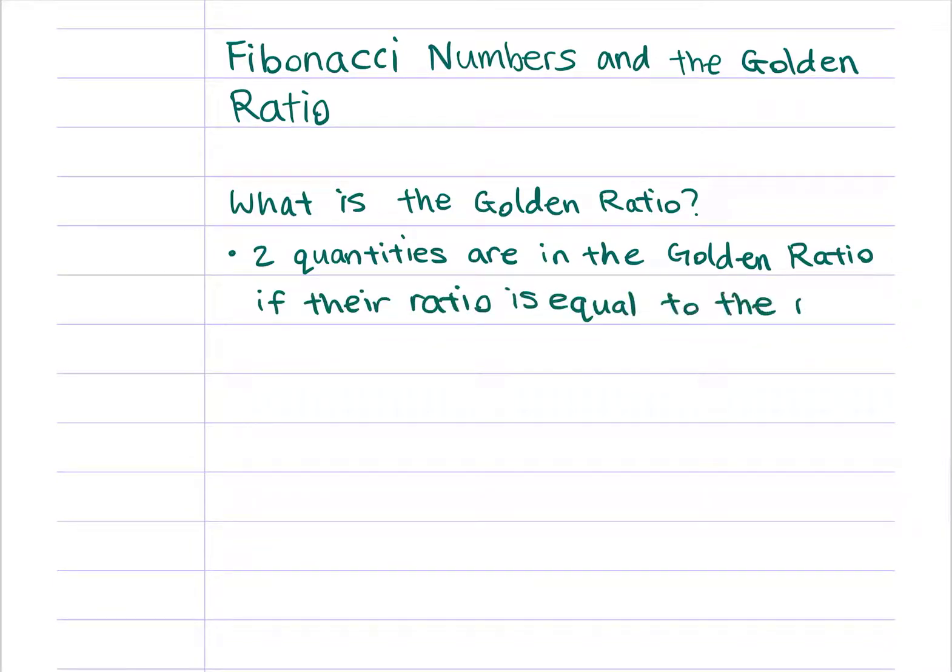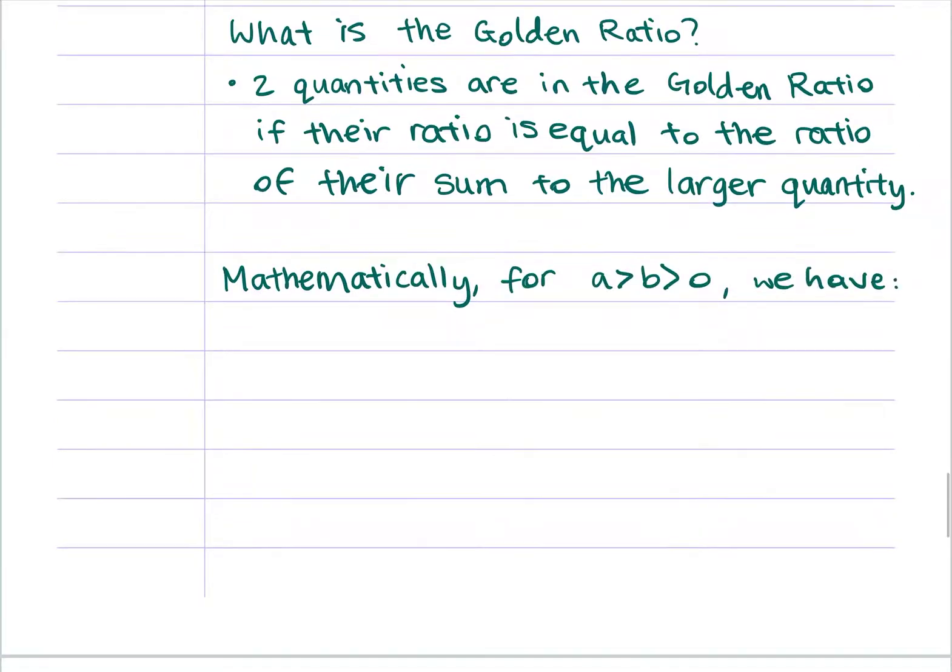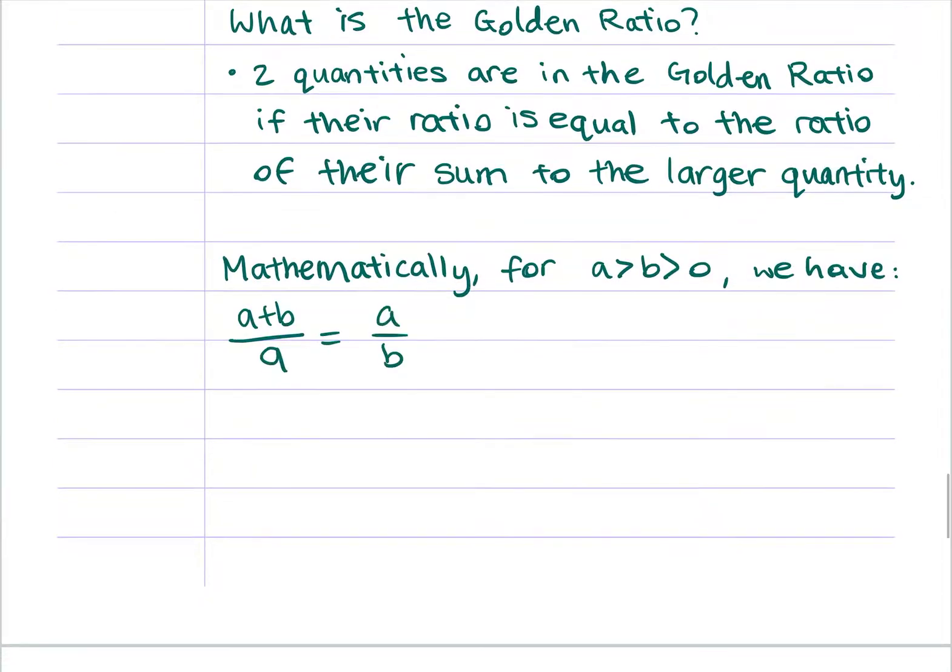Now, that sounded a little bit convoluted and confusing, so let me put it mathematically. For real numbers a is greater than b, which is greater than zero, we have a plus b over a equals a over b, which equals phi. Here, phi is the golden ratio. Let's see if we can compute phi, shall we?